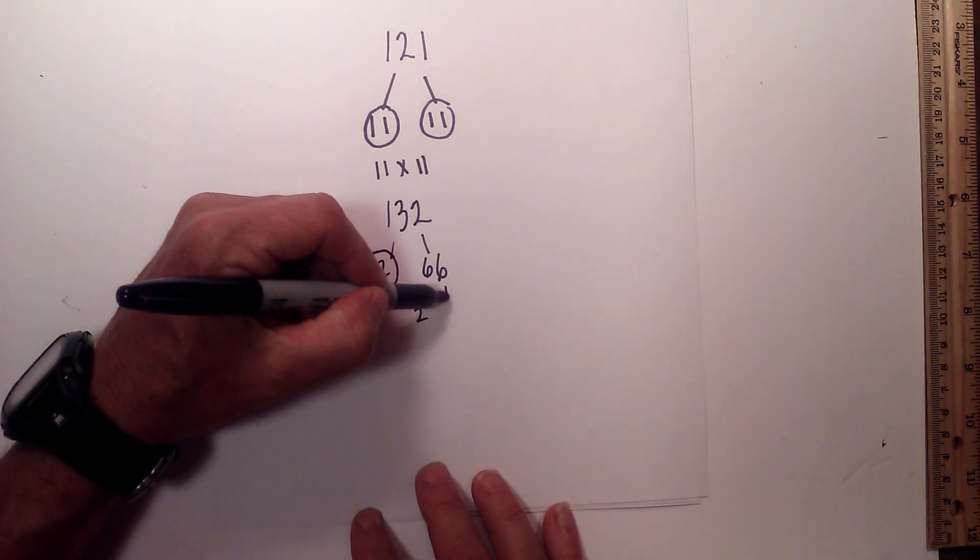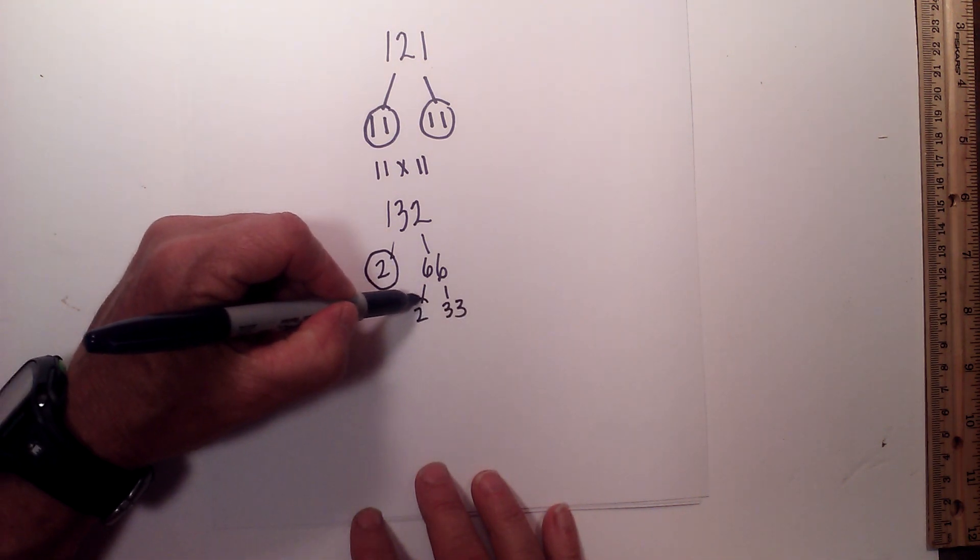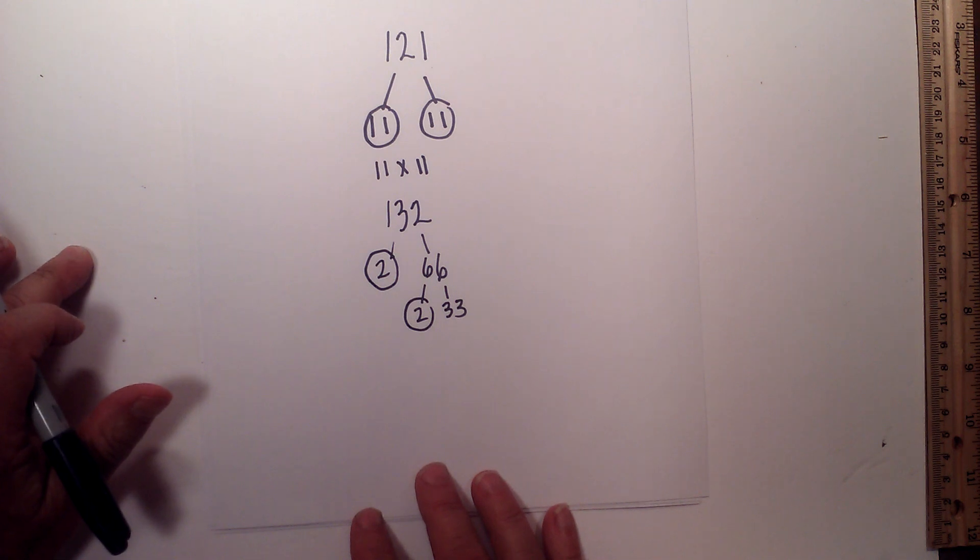2 times 33 equals 66. I will circle the 2 because that is prime.